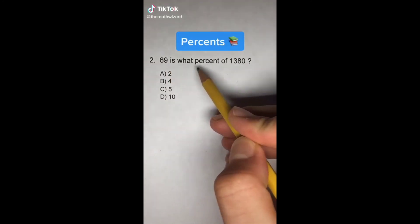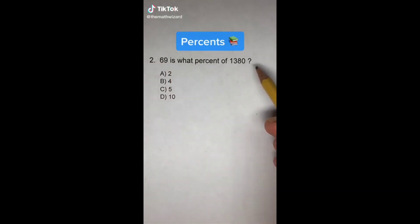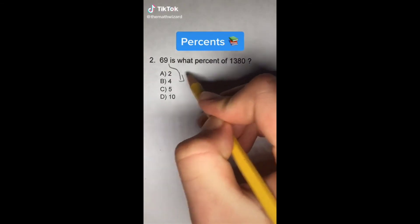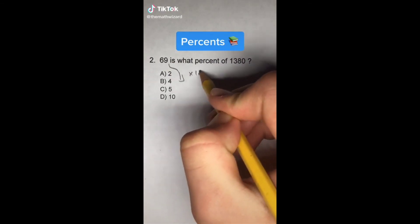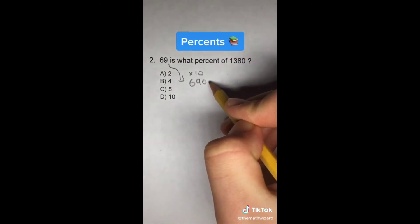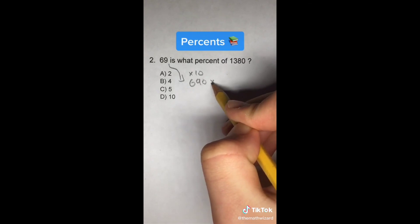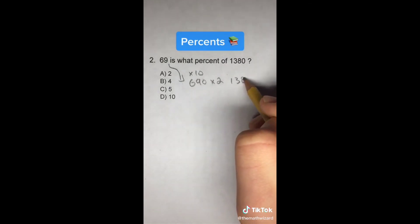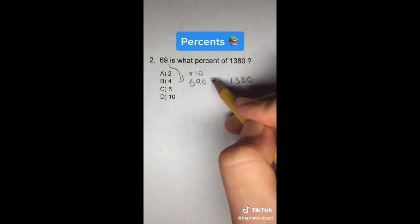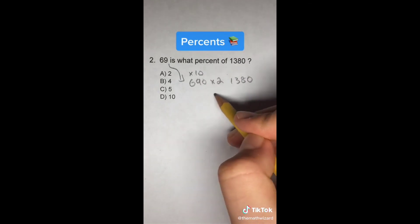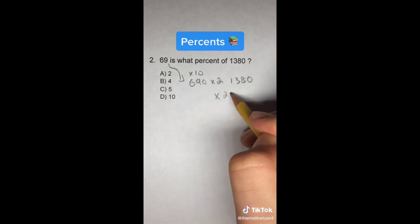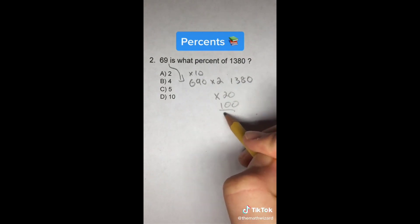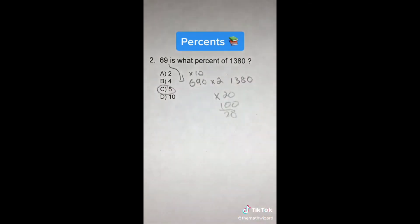If 69 is one percent of 1380, then multiplying 69 by 10 gives 690, and multiplying that by 2 gives 1380. So in total we multiply by 10 times 2, or times 20. And if we do 100 divided by 20, we get 5.